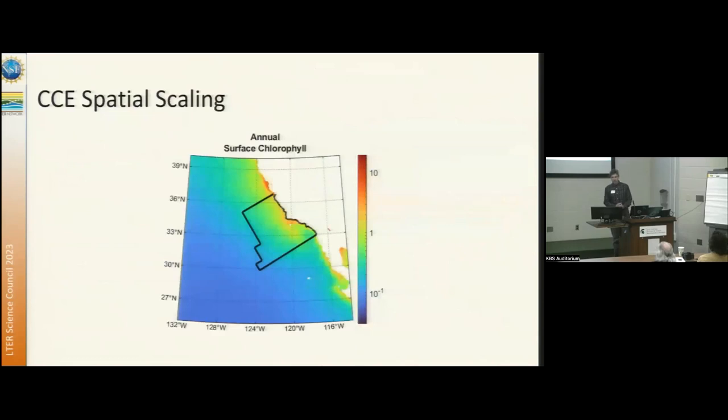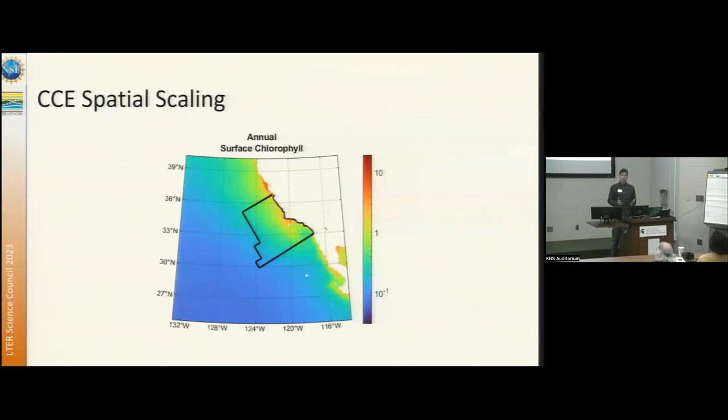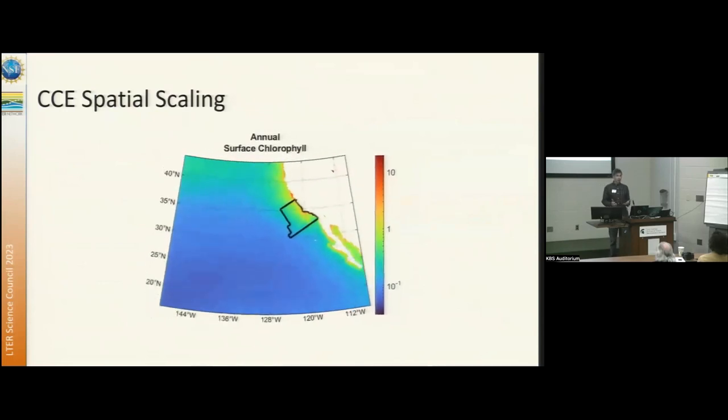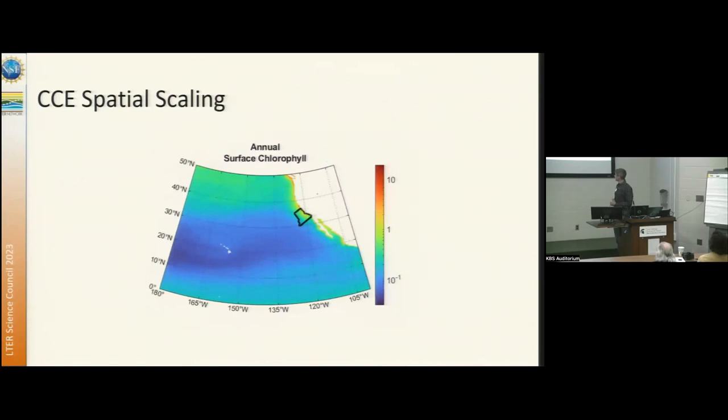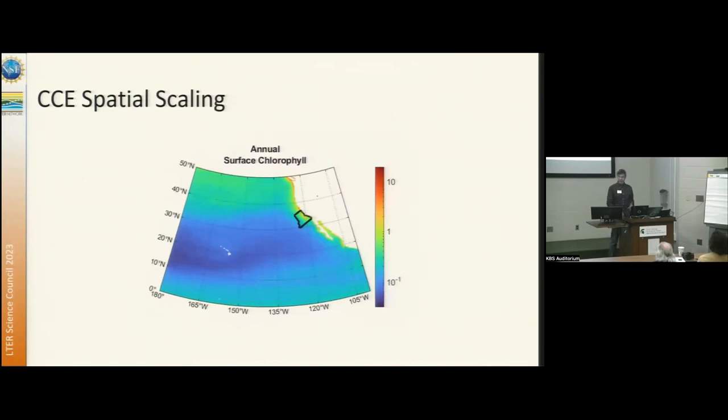When it comes to spatial scaling, it's important to keep in mind that the California current ecosystem has a huge productivity gradient. This shows annual surface chlorophyll in our region, and our region really spans most of the global variability and productivity in the open ocean, and so we often use what we call a space for time approach to use our spatial variability to try and assess how things will change in time. And this just now zooms out to the global oceans. You can see the offshore region of our domain is actually not that far off the average chlorophyll out in the middle of the open ocean Pacific.